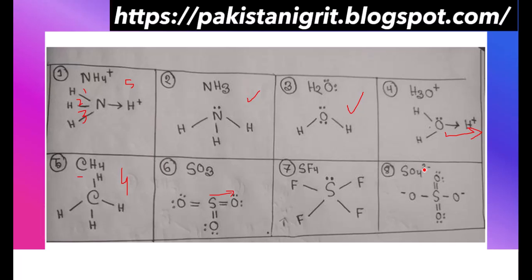In SO4 2− (sulfate ion), sulfur is forming two sigma bonds and two lone pairs are donating to the respective oxygens. Here there is a donation of two lone pairs toward the oxygens, so only two sigma bonds are directly formed — therefore SO3 will have sp2 hybridization.